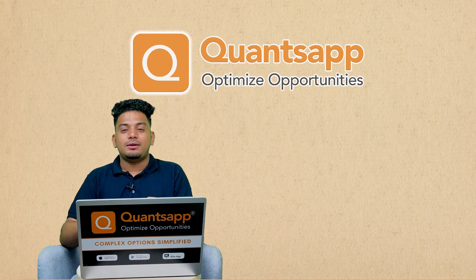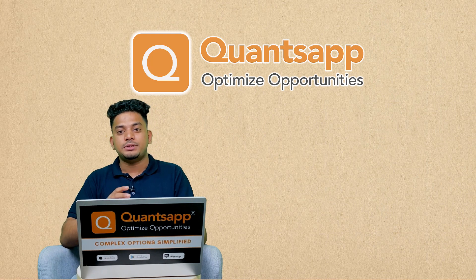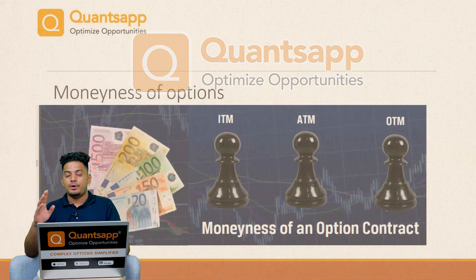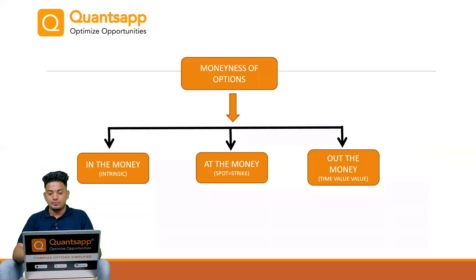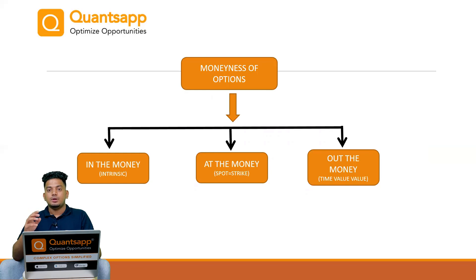Welcome back to another episode. In the previous video we understood how the premium of a particular option is calculated. In this video we are going to understand about the moneyness of an option, wherein there are three types: in the money option, at the money option, and out of the money option. In the money options are those options that at least have intrinsic value along with them, so on the expiration date these options will have some intrinsic value.